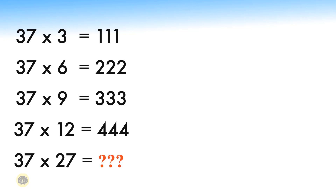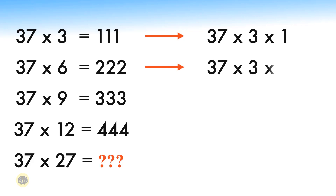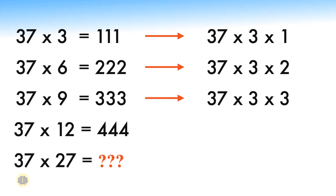First, let's split the given equations to find the trend. 37 times 3 equals 111 can be written as 37 times 3 times 1, which equals 111. Similarly, 37 times 6 equals 222 can be written as 37 times 3 times 2, which equals 222. And 37 times 9 equals 333 can be written as 37 times 3 times 3, which equals 333. And 37 times 12 equals 444 can be written as 37 times 3 times 4, which equals 444.